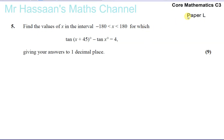Question number five from the Core Mathematics C3 Solomon paper. This is a collection of papers taken from some really old papers, called the Solomon papers. This is paper L.